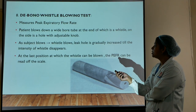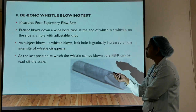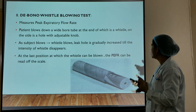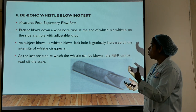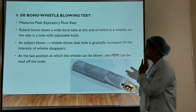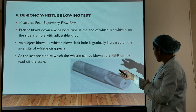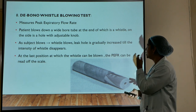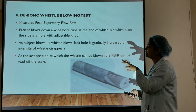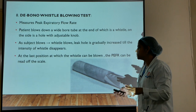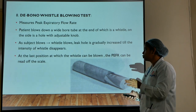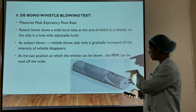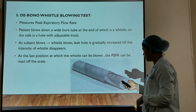De Bono's whistle blowing test is a bedside PFT that measures peak expiratory flow rate. The patient blows down a wide bore tube at the end of which is a whistle, with an adjustable leak hole on the side. As the subject blows, the whistle sounds. The leak hole is gradually increased until the whistle disappears, and at the last position where the whistle can be blown, the PEFR is read off the scale on the whistle.